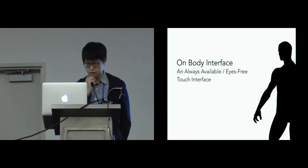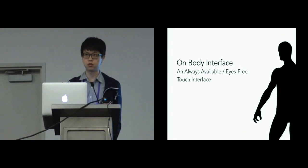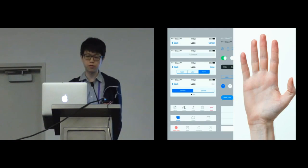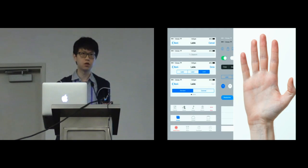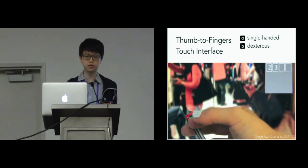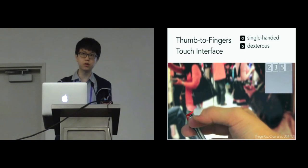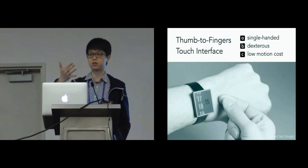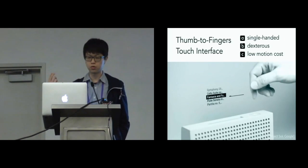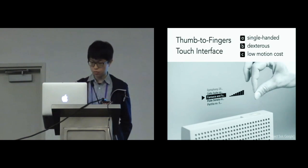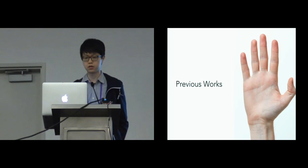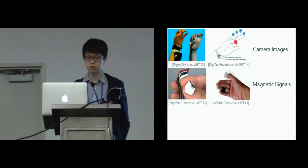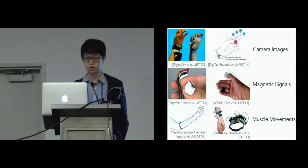The basic idea of this project is that we concluded a lot of advantages of thumb-to-fingers touch interfaces. They augment touch widgets on fingers and allow users to manipulate them by thumbs. The interaction requires solely a single hand, and human hands are dexterous to perform accurate and steady finger movements. Since the distance between thumb and fingers is short, the motion cost is also low. Previous works have demonstrated examples using camera images, changes in magnetic signals, or changes in muscle movements.